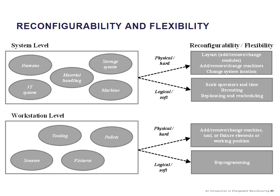Looking at the logical or soft enablers, we could, for instance, scale the number of operators or the time that they work in order to scale capacity — a reconfiguration of capacity. We could reroute, replan, or reschedule the different processes. Those are logical types of change enablers.